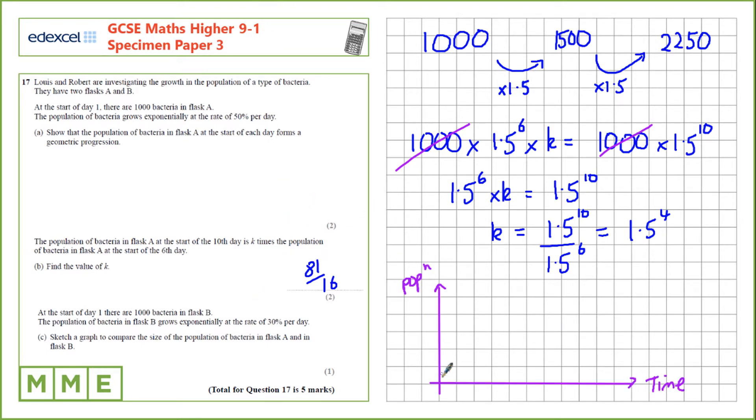So I've now set up some axes with time on the x-axis and population on the y-axis. For flask A we know we're going to have to start at a thousand because that's the initial amount and it's going to increase exponentially. So something like that.